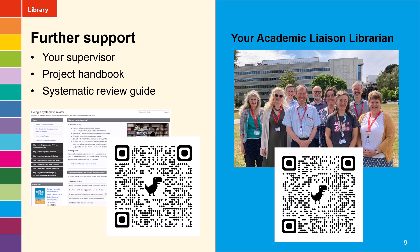Move on to the next video in this series to look at the first four of those steps. If you need further support with your review, definitely discuss it with your supervisor — make sure you're both on the same page when it comes to what type of project you're doing and whether you are actually doing a systematic review. Look at your project handbook, which should be available on Blackboard. Consult our systematic review guide if you are doing that type of study. And if you need more help, especially with your search strategy, choosing places to search, and using EndNote, please do contact your academic liaison librarian.